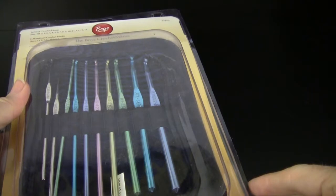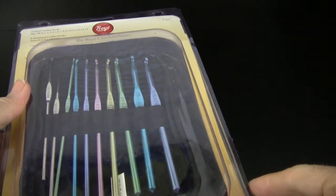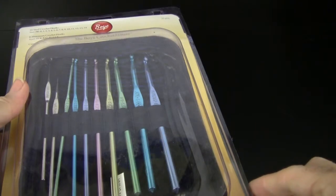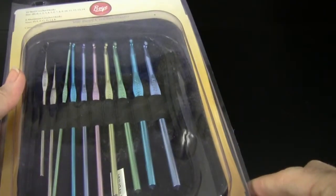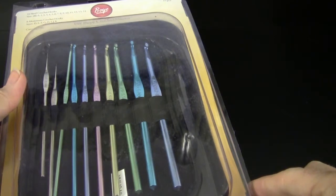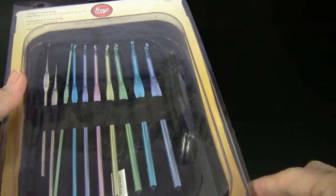Hi, this is Maggie Weldon from Maggie's Crochet Needlework and Crafts. Today I'm going to show you the Boye crochet master steel and aluminum crochet hook set, which is model number NM073270. That's available at maggiescrochet.com. It comes in a plastic container.